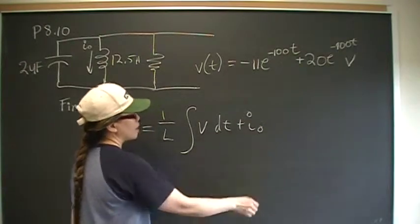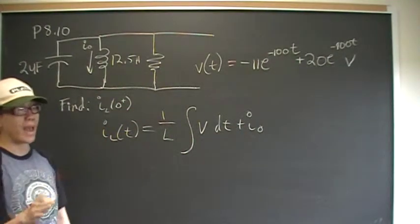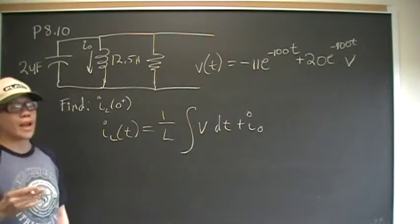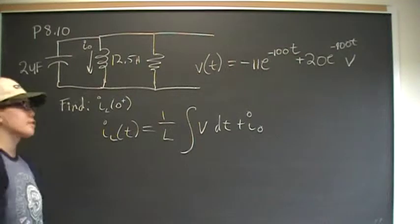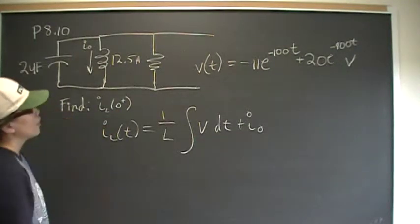I_0 is the current going through the inductor at time 0, not after, not at the time infinitesimally right after we start tracking things. That's different. That's what we're looking for.